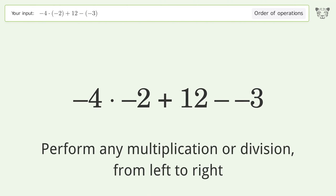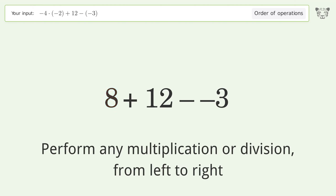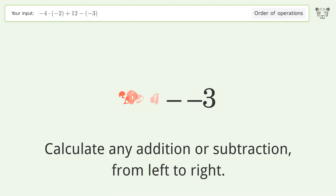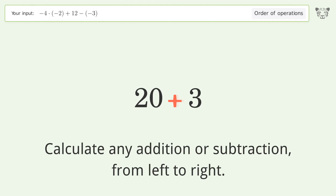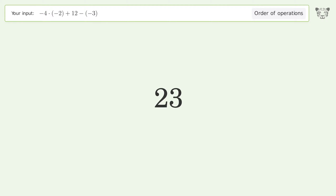Perform any multiplication or division from left to right: negative 4 times negative 2 equals 8. Then calculate any addition or subtraction from left to right: 8 plus 12 equals 20. Minus and minus make a plus, so 20 plus 3 equals 23. The final result is 23.